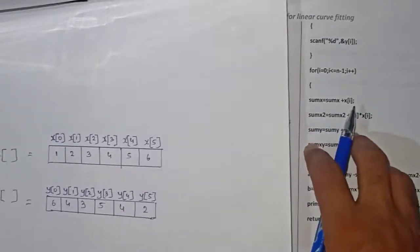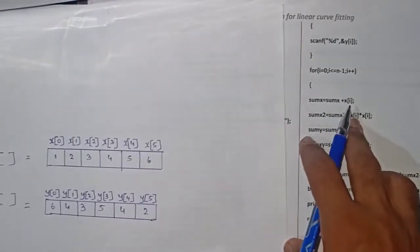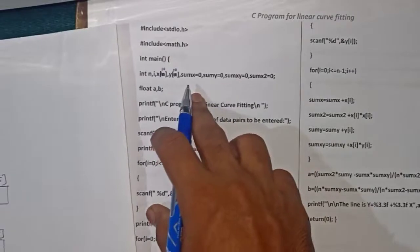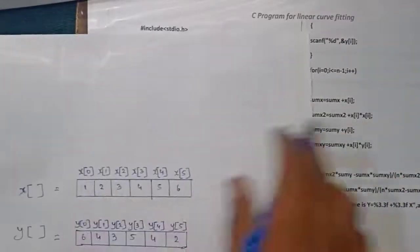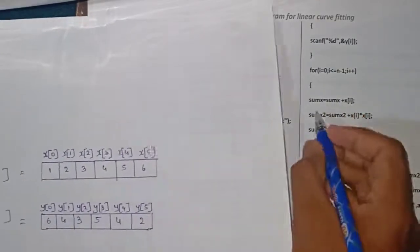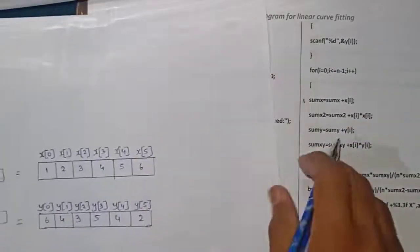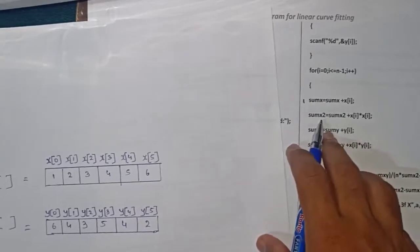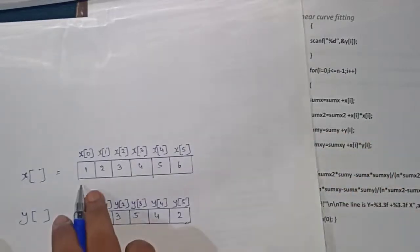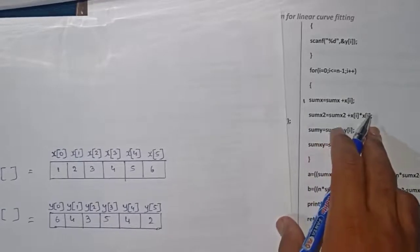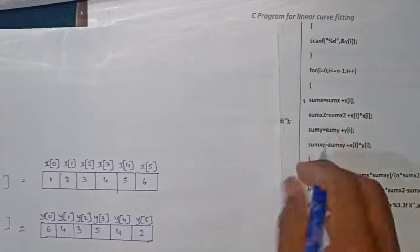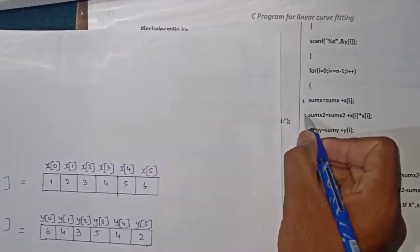Inside the loop: sumX equals sumX plus x[i]. For the first iteration i is 0, x[0] is 1, and sumX was initialized to 0, so 0 plus 1 gives sumX equals 1. Then sumX2 equals sumX2 plus x[i] times x[i]. x[0] is 1, so 1 times 1 is 1, and sumX2 was initialized to 0, so sumX2 becomes 1 for the first iteration.